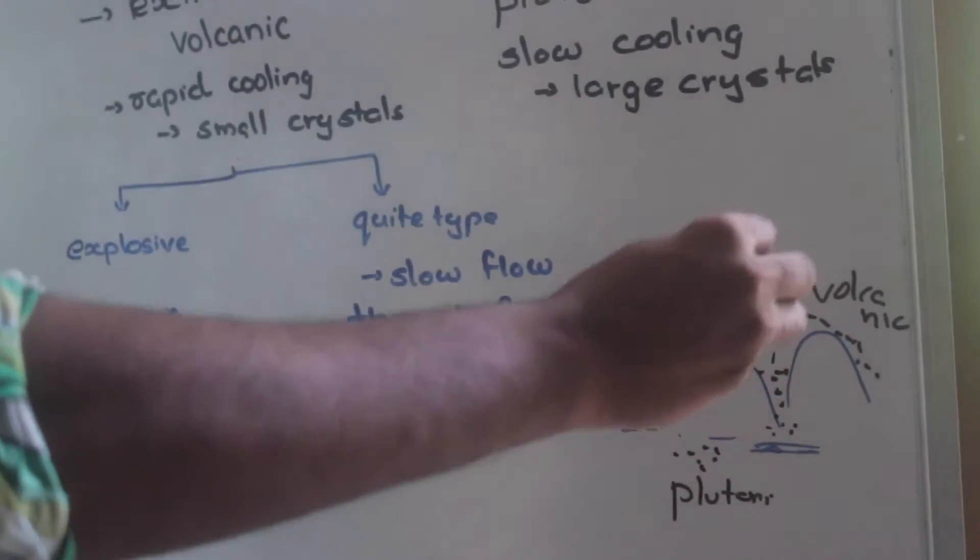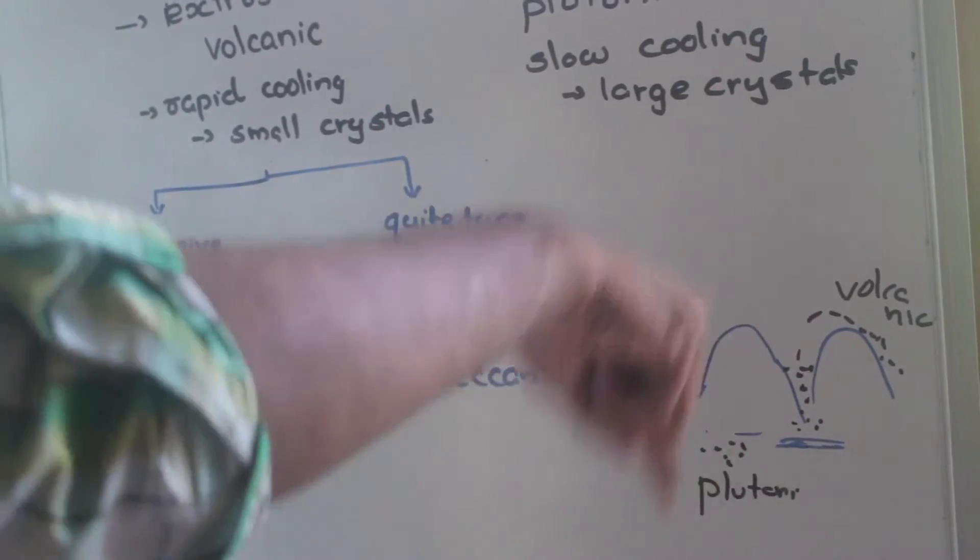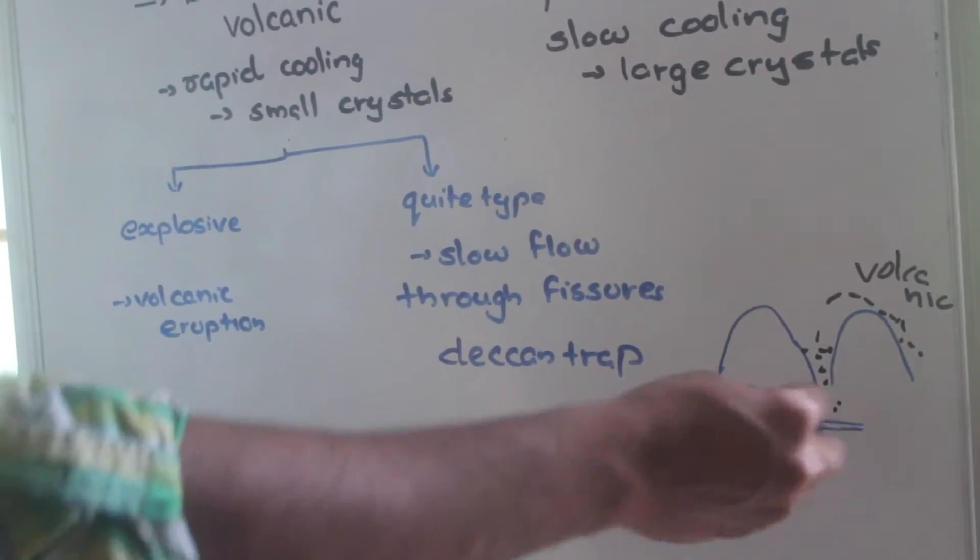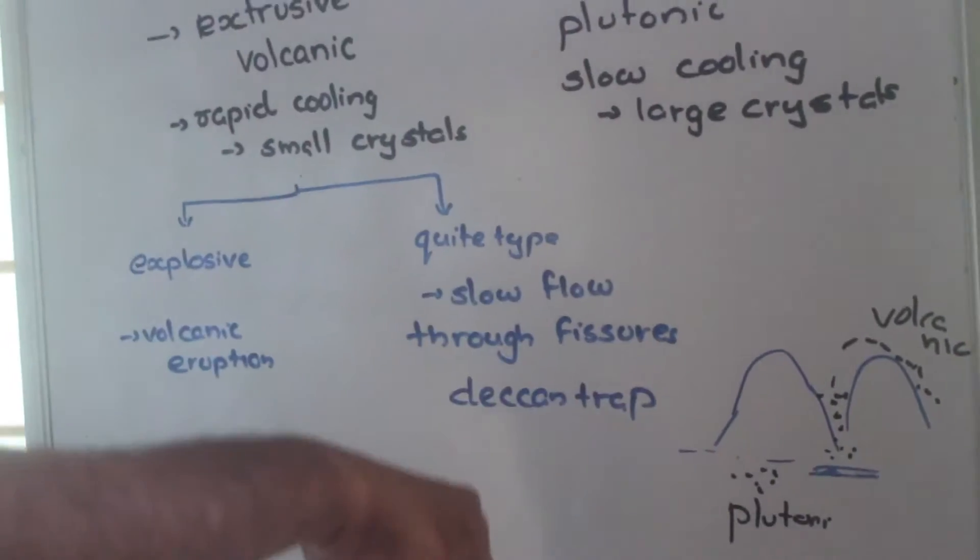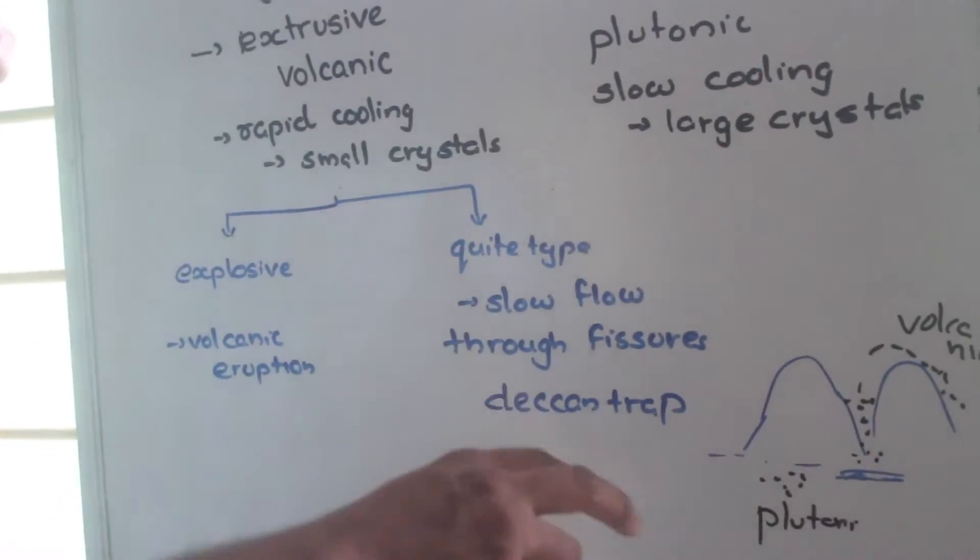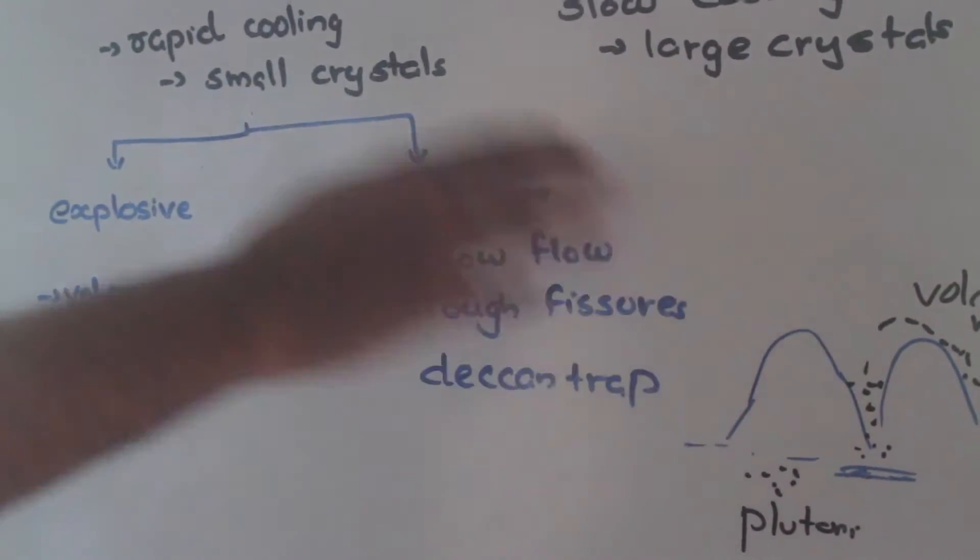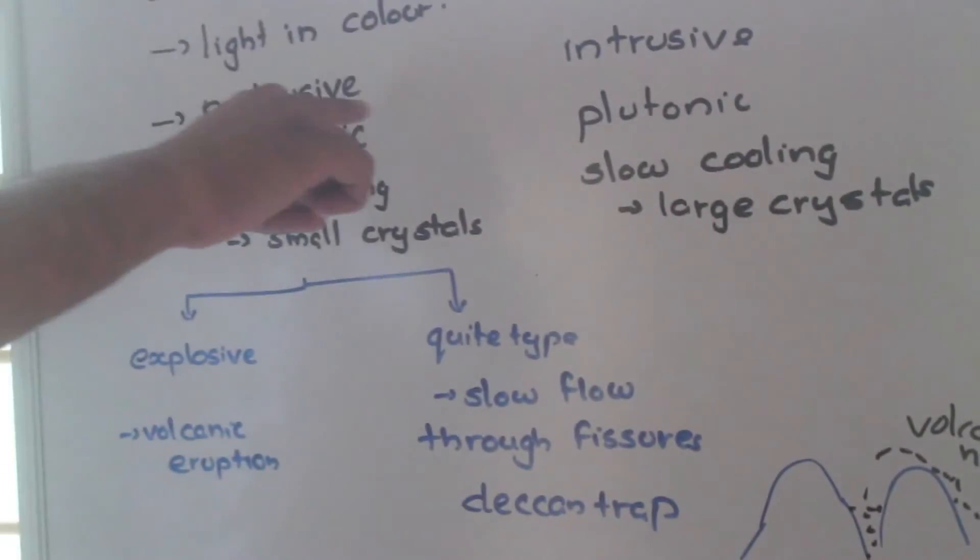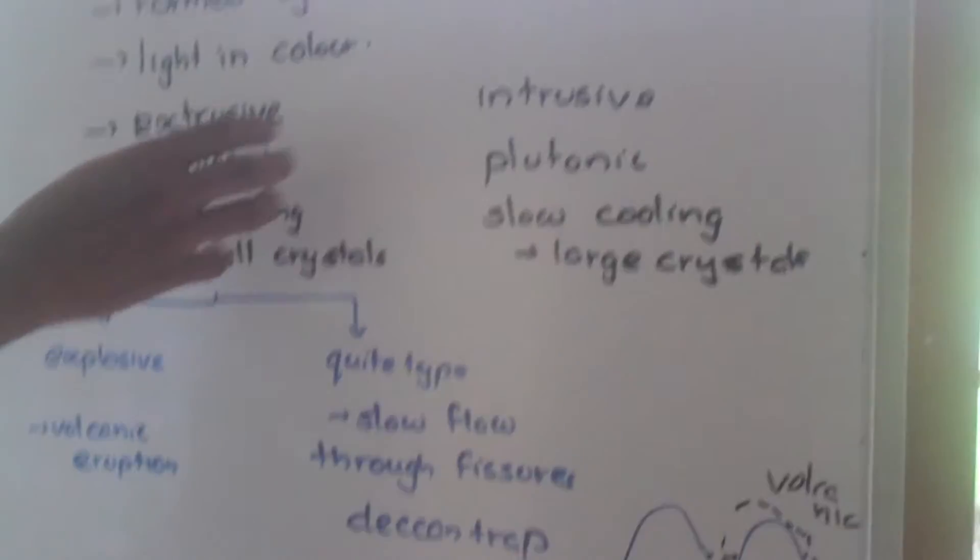Igneous rocks are formed by two ways. One is the magma can solidify inside the earth, or the magma will come out to the surface through the vent and solidify outside the surface. If the solidification takes place on the surface of the earth, we call it extrusive rock. Extrusive rocks are formed by volcanic eruptions.